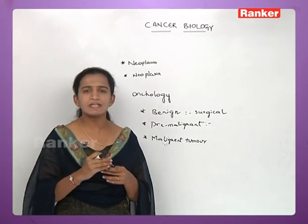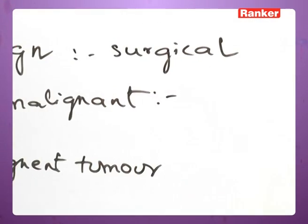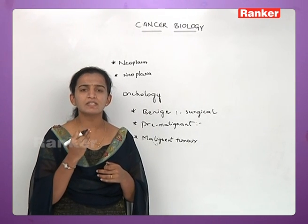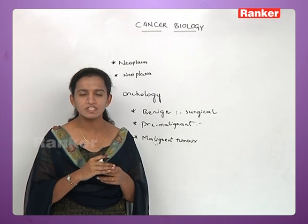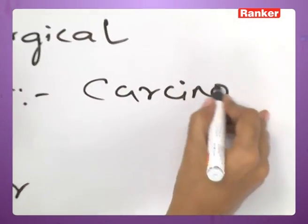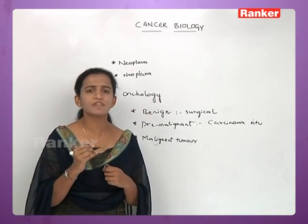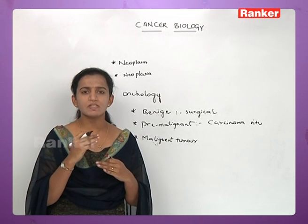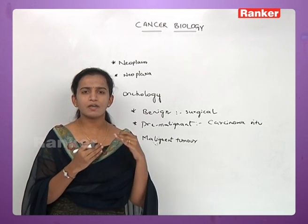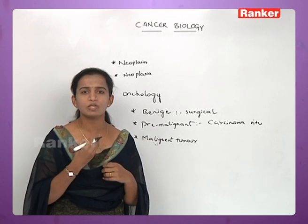Pre-malignant tumors have a tendency where the cancer cell is present in the body but does not come to expression until a certain stage or age. This is also called carcinoma in situ. The cancer cell is present but may take five or ten years before its characters are expressed and evolve.